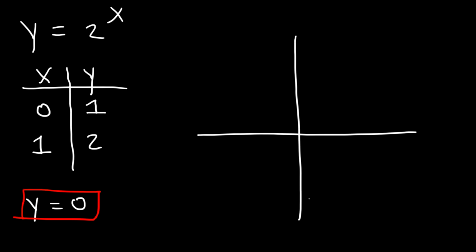Now let's go ahead and graph it. The first point is (0, 1), which is the y-intercept, and the next point is (1, 2). We're going to start from the horizontal asymptote, which is the x-axis, and then it's going to increase. Exponential functions increase at an increasing rate, and that's how we graph them.